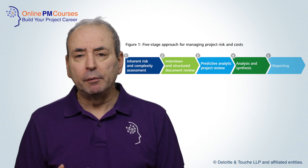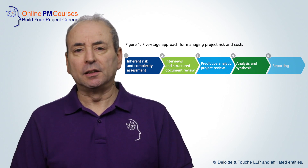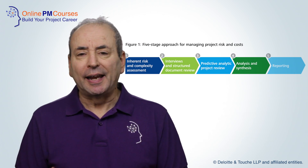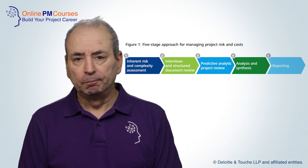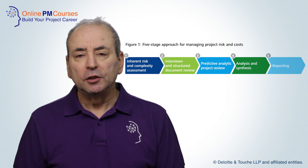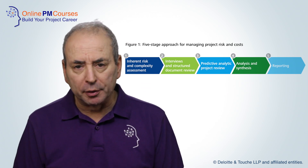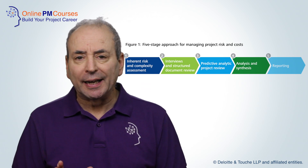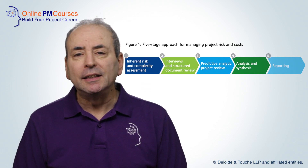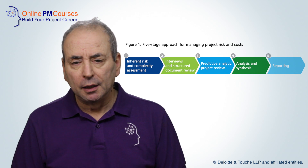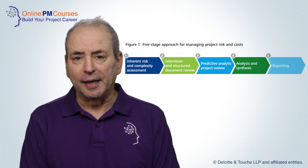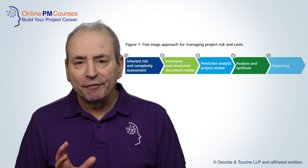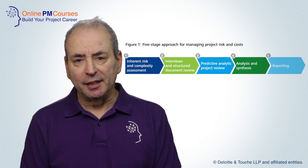At step three, we feed all of this information into the software and use predictive analytics to carry out a risk review. At step four, Deloitte analyzes the output from the predictive analytics tool and uses that information to identify potential improvements to the risk controls on the project. And at step five, they report on their findings and make their recommendations.